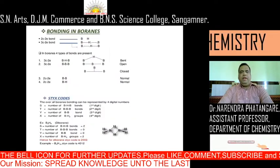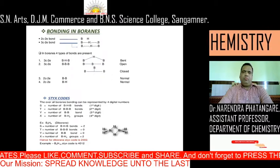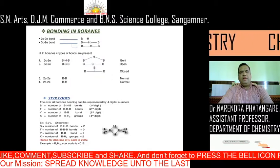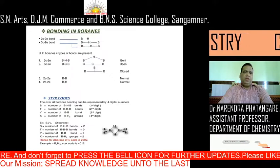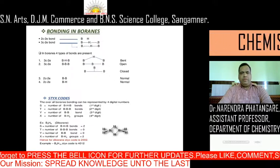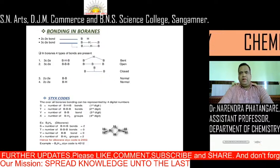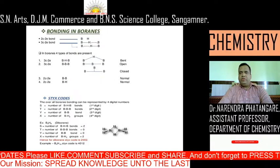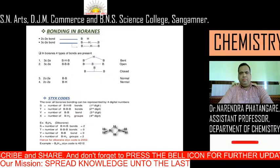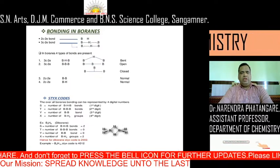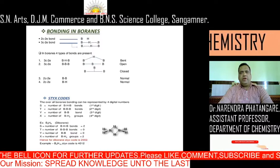Bonding in boranes involves different types of bonds. Two-center two-electron bonding is the direct bonding between boron and hydrogen. Three-center two-electron bonding is B-H-B bridging bonding, where a hydrogen is positioned between two borons at a bridged position. In boranes, four types of bonds are present: three-center two-electron B-H-B bond (bent), three-center two-electron B-B-B bond (open), two-center two-electron B-B bonding (normal), and two-center two-electron B-H bonding (also a normal bond containing two electrons).